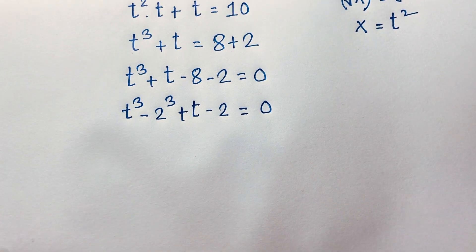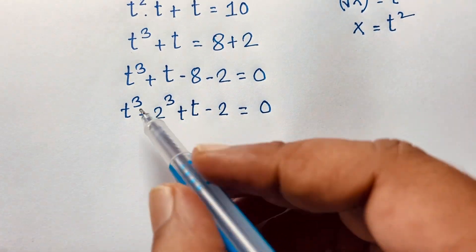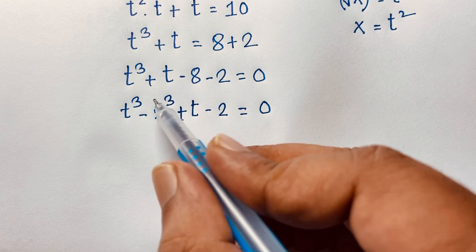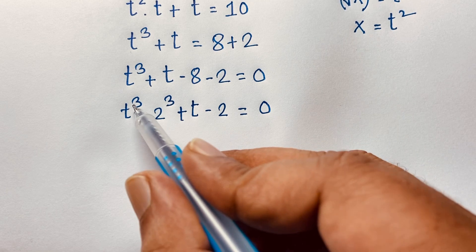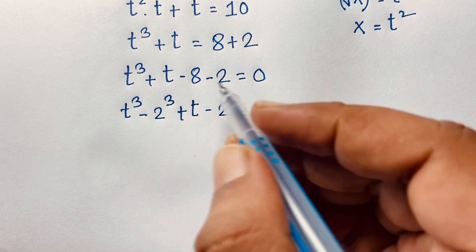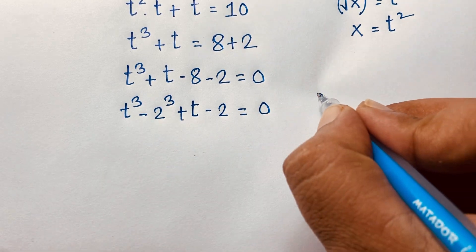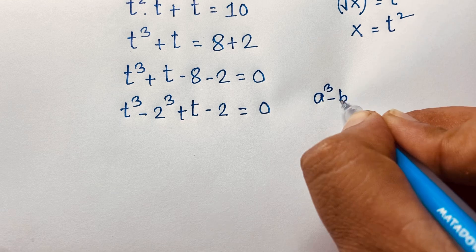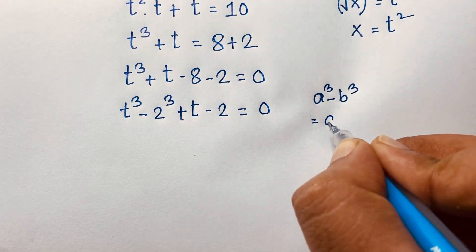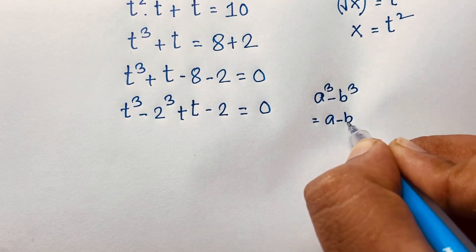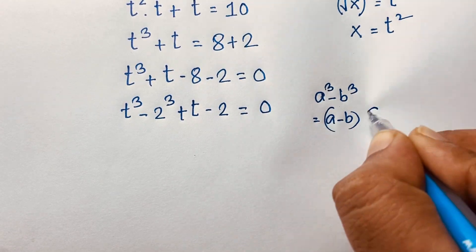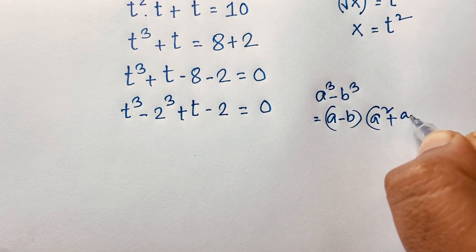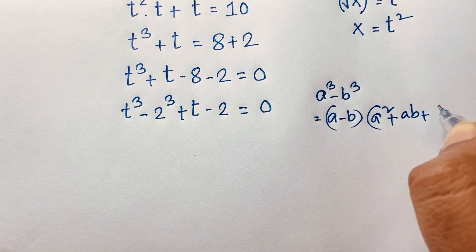Here t cubed minus 8 is t cubed minus 2 cubed, which is a difference of cubes. The formula is a cubed minus b cubed equals a minus b, times a squared plus ab plus b squared.